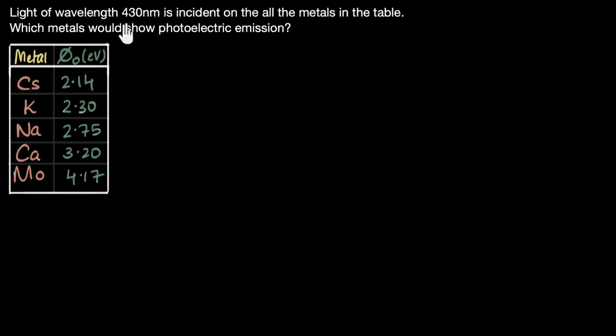Let's solve a problem on photoelectric effect. We're given light of wavelength 430 nanometers is incident on all the metals in the table. Which metal would show photoelectric emission? So light of this wavelength is incident on all these metals and we have to predict which of these will show photoelectric effect, in which of these cases electrons are gonna come out. So where do we begin?